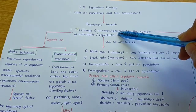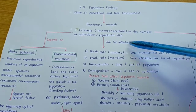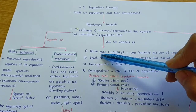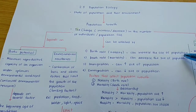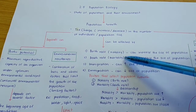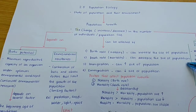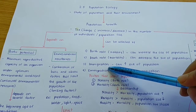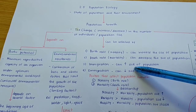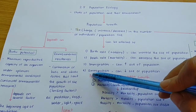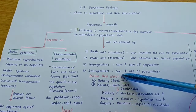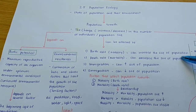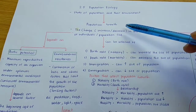So what affects population growth? It can be affected by birth rate, or what we call natality. Birth rate can increase the size of population. Death rate, or mortality, can decrease the size of the population. It can also be affected by immigration — when immigration occurs, it can increase the size of population. And then emigration can decrease the size of population.